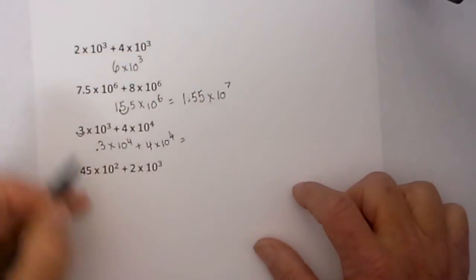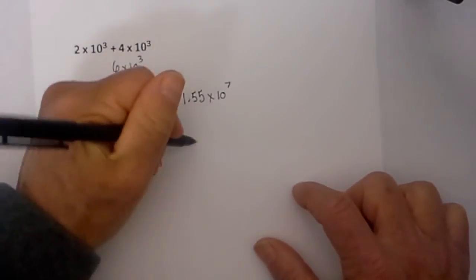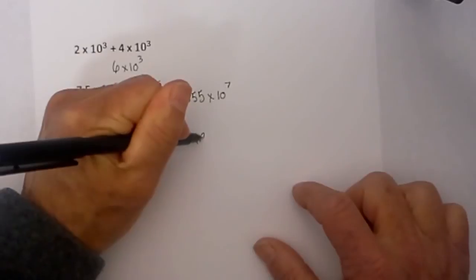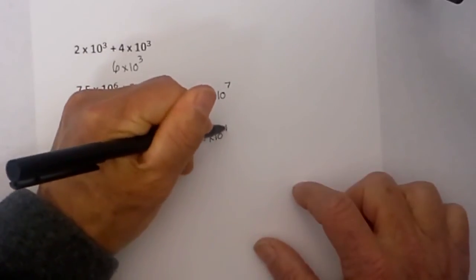When we add these two together, 4 plus 0.3 is 4.3 times 10 to the fourth.